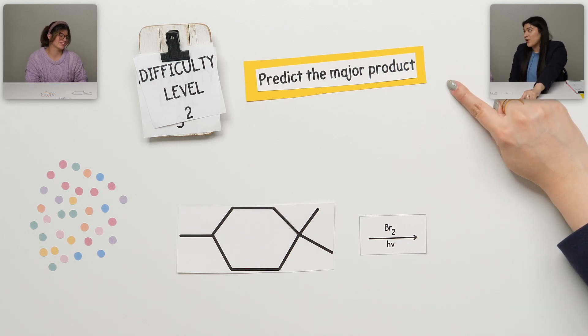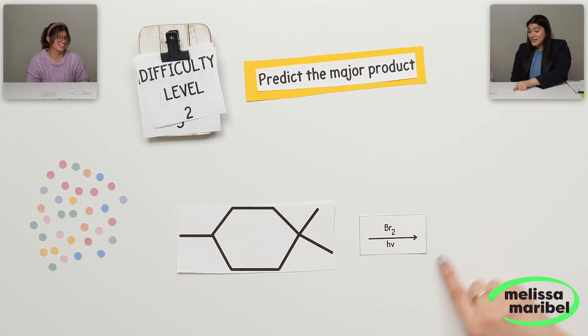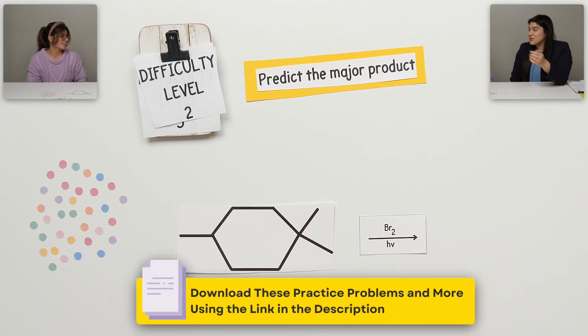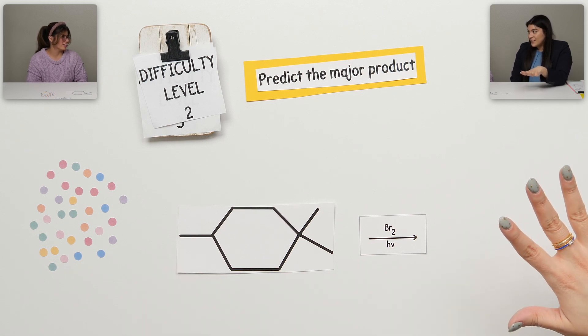We're going to predict the major product. Remember with radicals there are several possibilities, however we still go back to what we just looked at—stability, picking what's going to be the most stable.